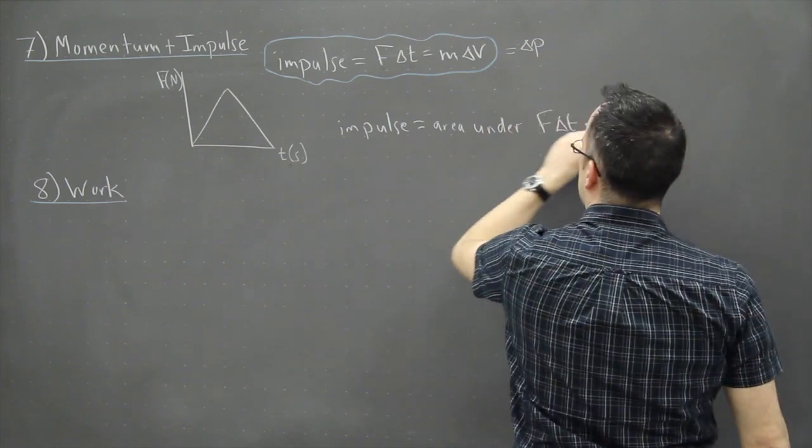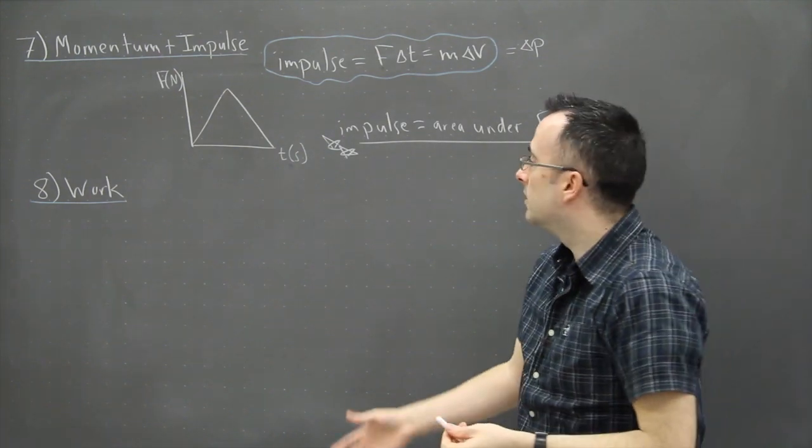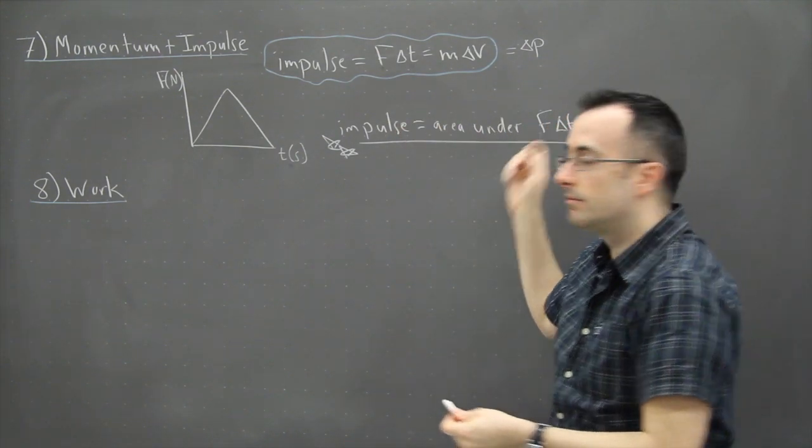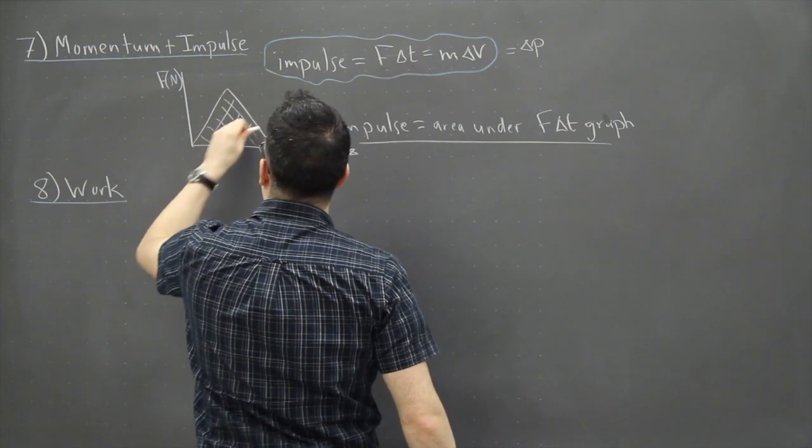The important thing to take home here is that impulse is the area under an F delta T graph. In other words, the impulse is going to be this area here in this case.